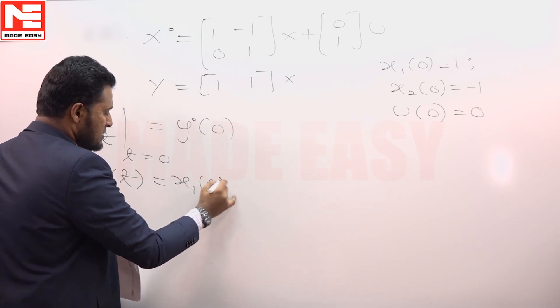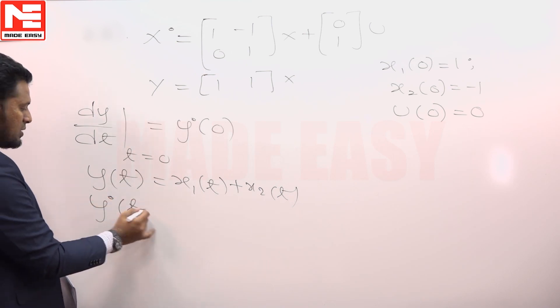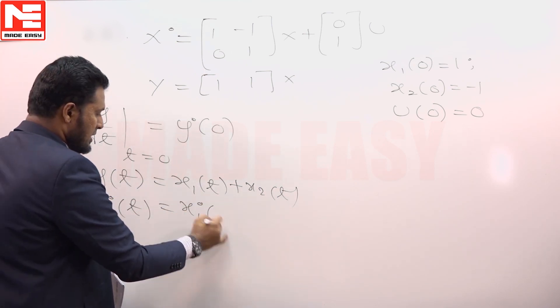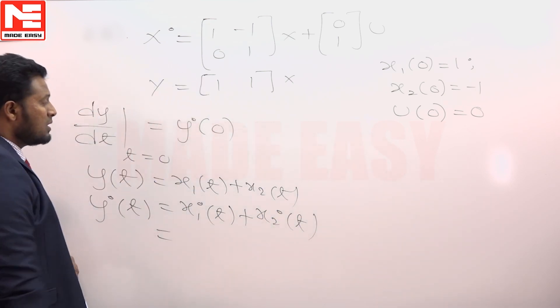We can describe output of this system y as x1 plus x2. So y of t is x1 of t plus x2 of t.